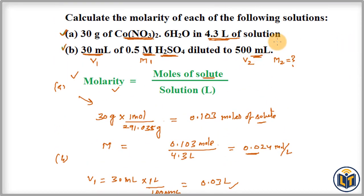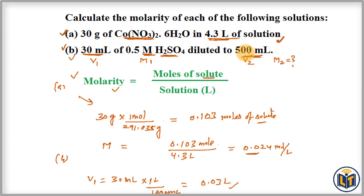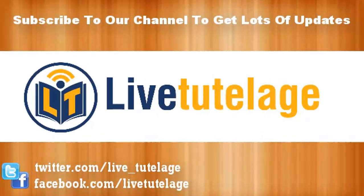In summary, both parts used different methods. In Part A, I applied the direct molarity formula to calculate the concentration. In Part B, I applied the dilution formula M1V1 = M2V2, because the H2SO4 solution was diluted from 30 mL to 500 mL, to calculate M2, the concentration of the diluted solution.